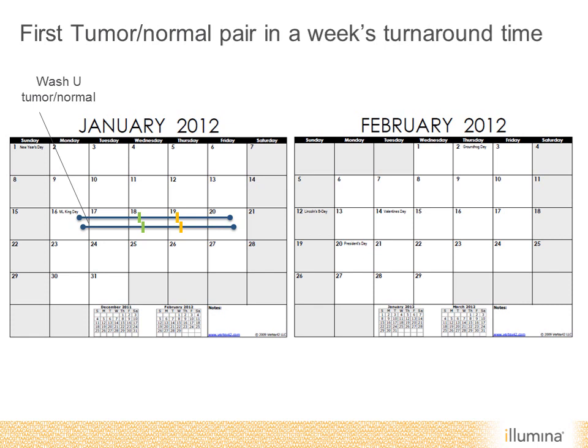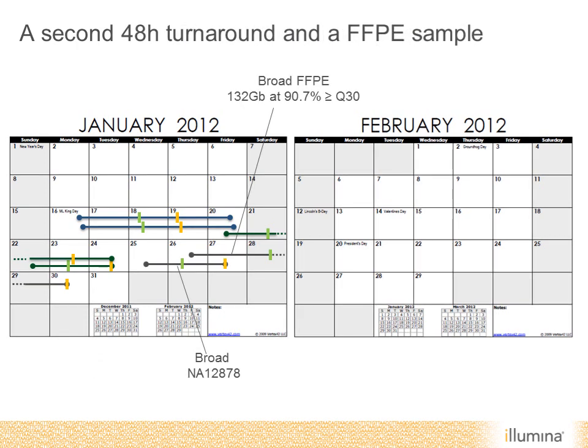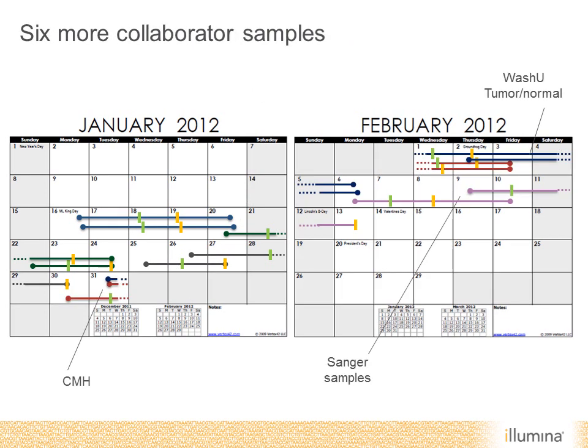We followed up with another pair of tumor-normal samples from British Columbia, the second of which started on a Sunday and finished with data shipped to the collaborator on Tuesday. We then achieved the same two-day turnaround with a sample from Broad, and also kicked off a run sequencing FFPE samples Broad had sent us, achieving 130 gigabases of data of which a very high percentage was very good quality. We then sequenced samples from Children's Mercy Hospital, another pair from WashU, and samples from Sanger.